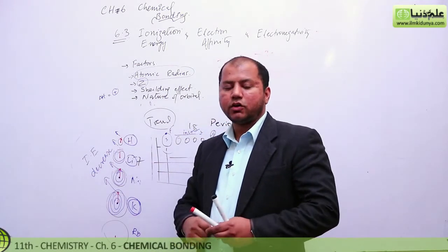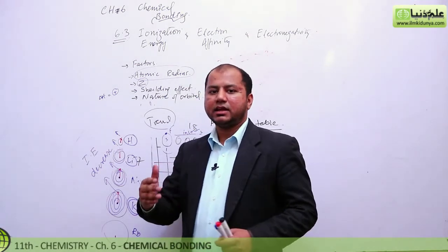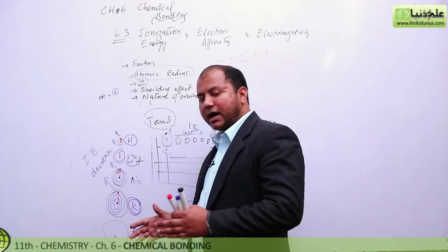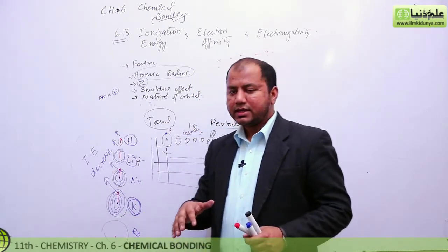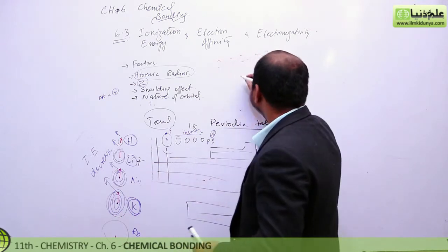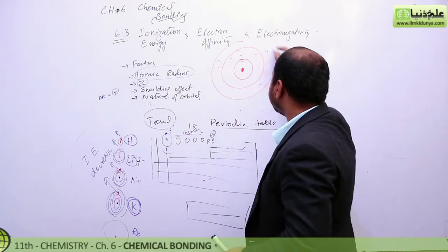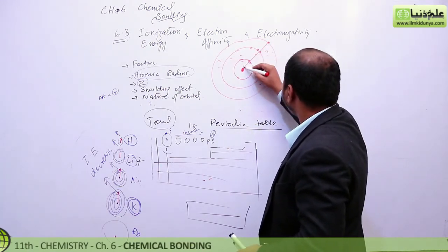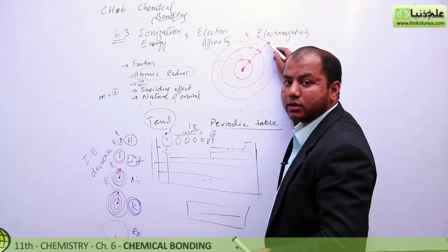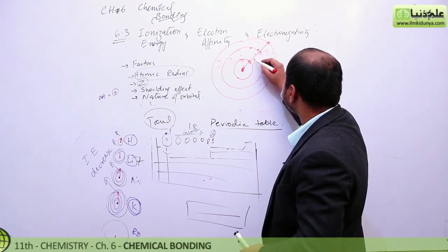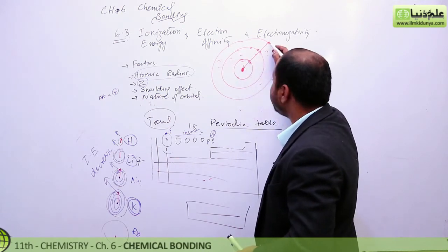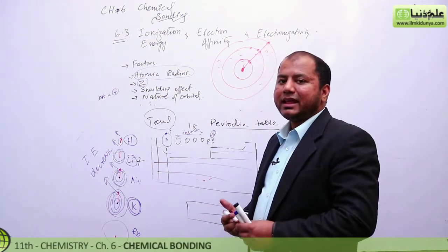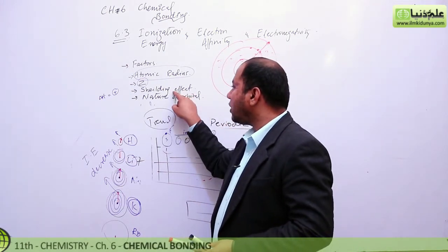Let me explain shielding effect with an analogy. Imagine you have to approach a wall (the nucleus), but there are many people (inner electrons) blocking your path. Those inner electrons shield the outer electrons from the full pull of the nucleus. So if there are many inner shells with many electrons, the outer electron is shielded — the effective nuclear charge is reduced — and ionization energy decreases.